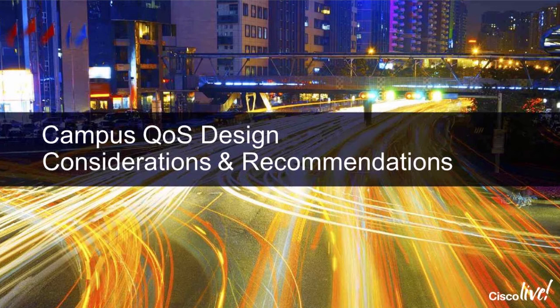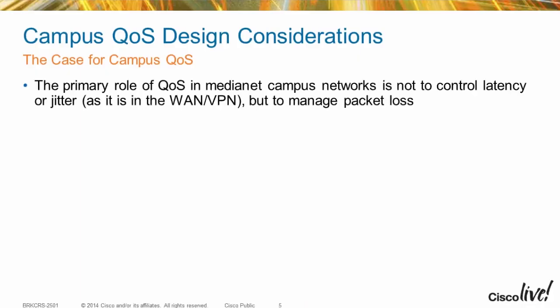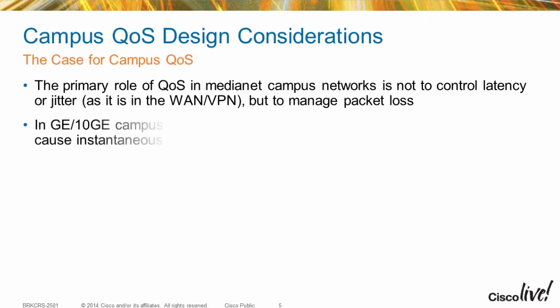Let's take a look at the first part of our discussion: the considerations and recommendations. Why do we need QoS in the campus? What are we looking to control — latency, jitter, or packet loss? The answer is packet loss. We're not concerned about latency; latency is actually a fixed quantity — how long a packet takes to travel from point A to point B in an enterprise campus network because of the speeds involved. We're dealing with a few milliseconds at best. Jitter is even less. What we are concerned about, and the whole point of our policies in the campus, is to control packet loss.